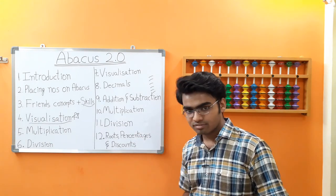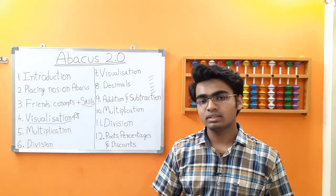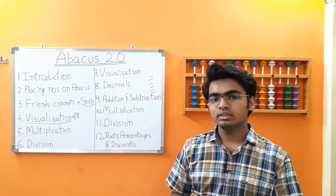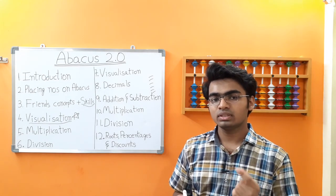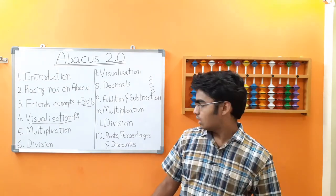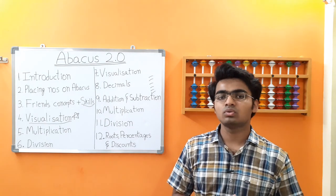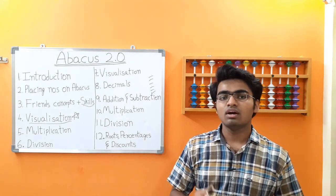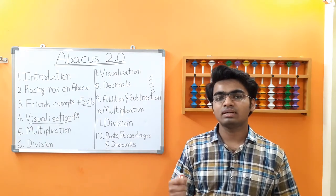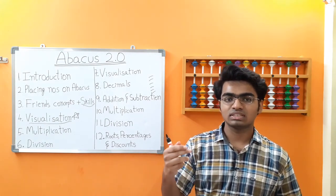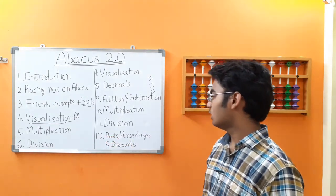In the advanced multiplication module, we are going to have three-digit into two-digit, three-digit into three-digit, four-digit into one-digit, and four-digit into two-digit. As part of advanced division, we are going to have four-digit by two-digit, five-digit by two-digit, five-digit by three-digit, and six-digit by two-digit.